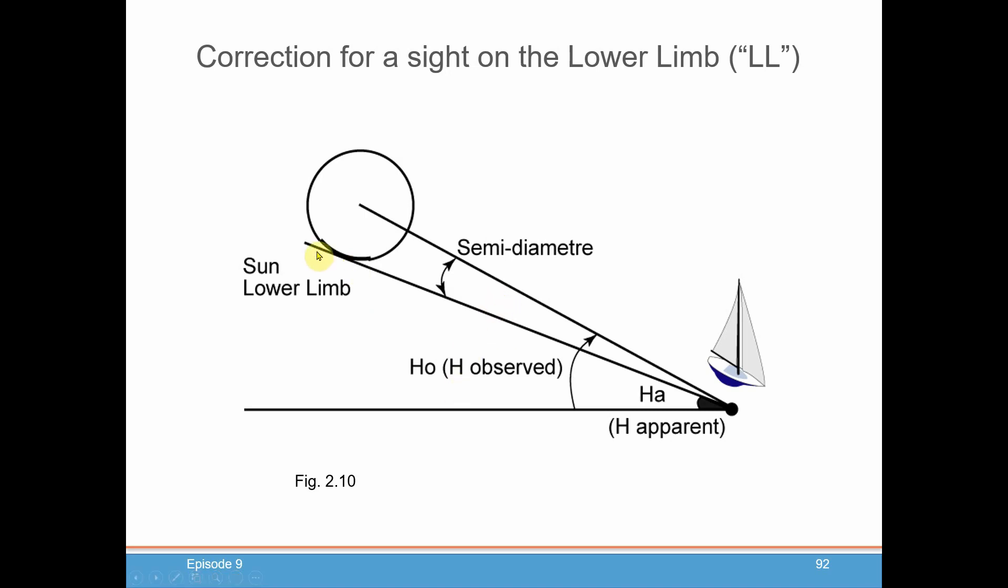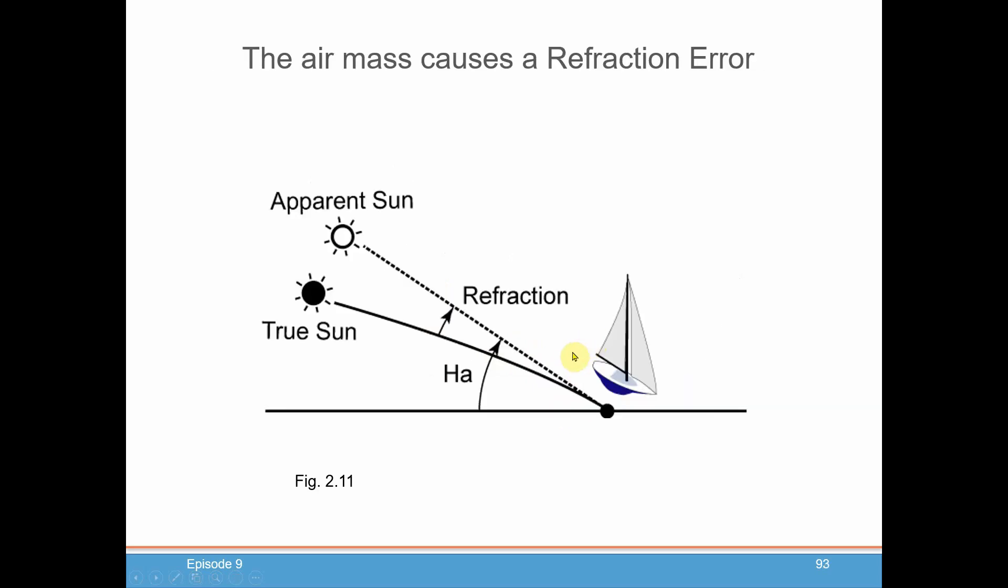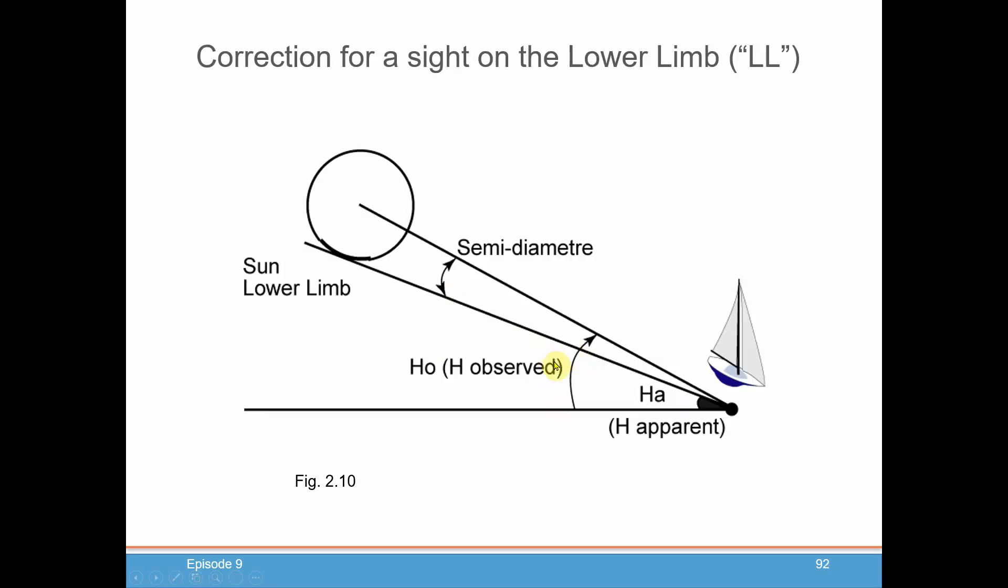But because we're measuring the lower limb, we have to take into account this semi-diameter. So the correction, which we'll be doing for the semi-diameter, will tell us how to take this angle that we observe, which is this smaller angle, and gives us this semi-diameter correction so that we get the full height, the full altitude that we want. So that's the first correction.